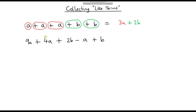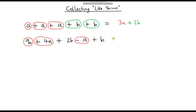Let's do another one. We've got this long expression — let's collect like terms. Looking at the A terms: we've got 9A, and then we're adding on another 4A, which gives us 13A in total. But over here we are subtracting an A — that's minus 1A. So nine A's plus four A's gives 13, minus 1A leaves us with 12A.